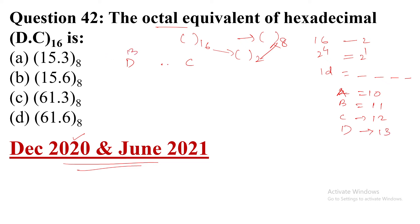So D is 13 and C represents 12. We will take the 4-bit representation. Now, 13 is 8 plus 4 plus 1, and 12 is 8 plus 4.